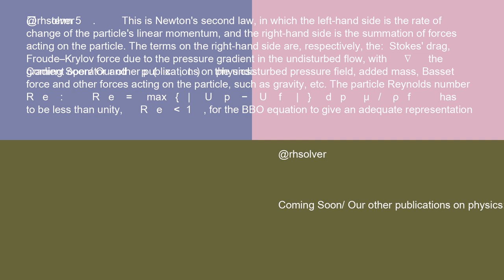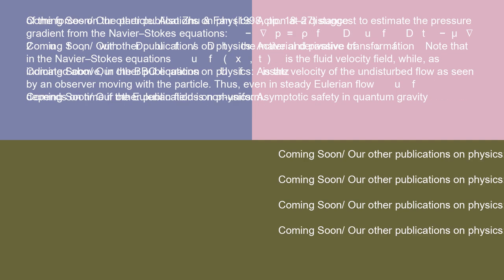Bassett force, and other forces acting on the particle, such as gravity, etc. The particle Reynolds number Re equals max(|Up - Uf| dp/(mu/rho_f)) has to be less than unity, Re < 1, for the BBO equation to give an adequate representation of the forces on the particle.